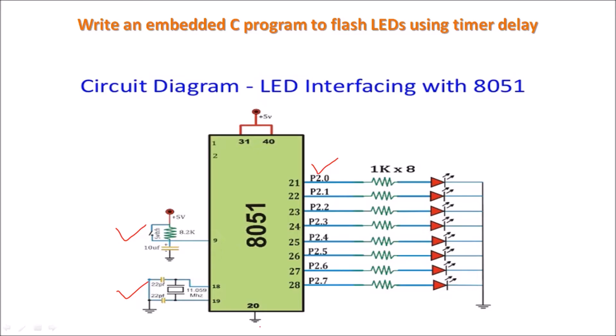Here we are going to use Timer 0 in Mode 1 to generate a delay. The delay calculations and the assembly language program are discussed in previous videos, so you can refer to those for how to compute a delay, initialize registers, and write the program in assembly language. Here we will see how to write the program in Embedded C.